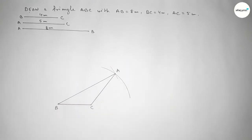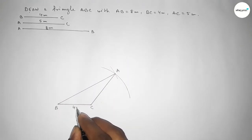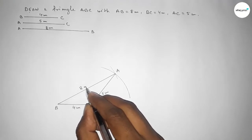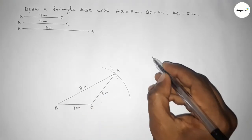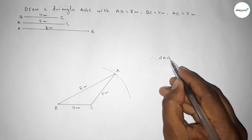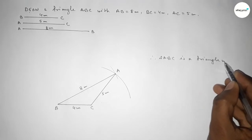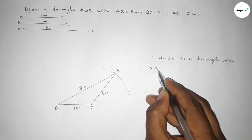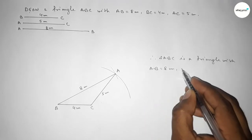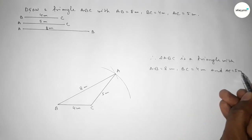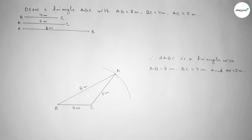This side is 4 centimeter, this is 5 centimeter, and this side is 8 centimeter. Therefore, triangle ABC is a triangle with AB equal to 8 centimeter, BC equal to 4 centimeter, and AC equal to 5 centimeter. That's all — thanks for watching. If this video is helpful, please share it with your friends, and please like, comment, and share.